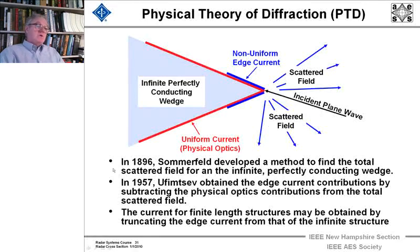Those two guys did their work, and Ufimtsev's work, although done at the same time, didn't get out in the open. Not that it wasn't in the open literature, but it wasn't translated and understood by the community, the world community, that incredible computational physics contribution. And later, the current from a finite length structure can be obtained by truncating the edge current from the infinite structure. So there's a method for calculating the non-uniform edge current, which has been extremely an important part of computational electromagnetics. And there's a number of other very, very bright people.